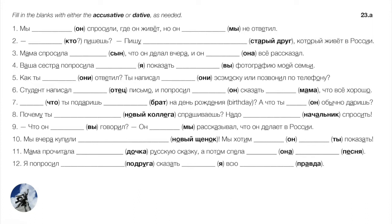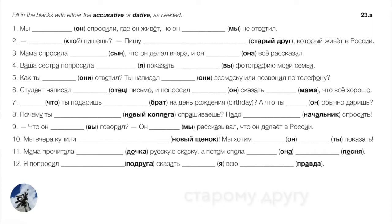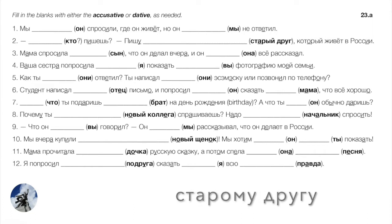Number two: blank, you are writing. The only thing that would make sense is 'to whom are you writing?' So what's the dative of кто? Кому. Кому пишешь? — I'm writing to an old friend who lives in Russia. Clearly we need the dative: Пишу старому другу, который живёт в России.